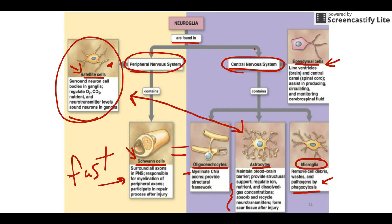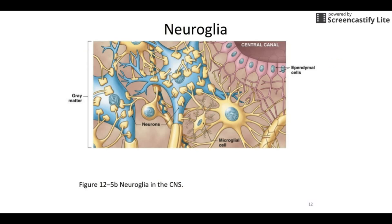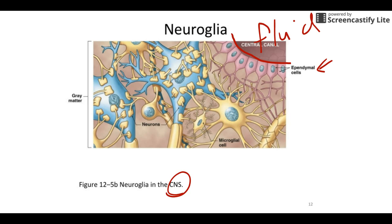You will want to know what each of these neuroglia specifically do for quizzes. Looking at this picture, there's cerebrospinal fluid up here with a lining along the edge made of ependymal cells. This is the central nervous system, so we won't have satellite or Schwann cells, but we can see the oligodendrocyte here wrapping myelin around axons. And right here in the middle is the microglia, which goes and fights infections and cleans up debris.